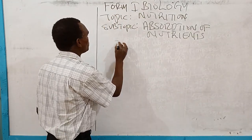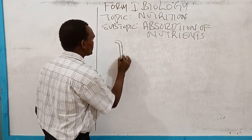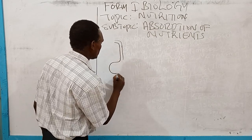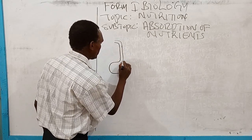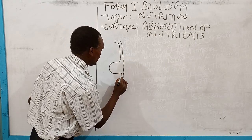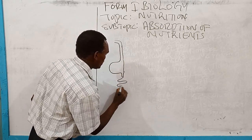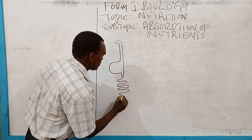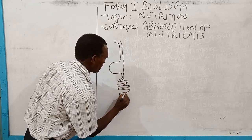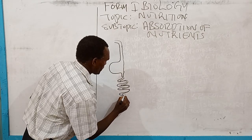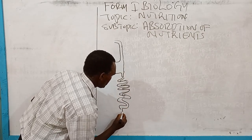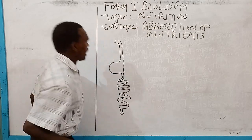Very quickly, we put down a simple draft. That is: the esophagus, the stomach, the duodenum, the ileum, then we have the large intestine and the rectum.